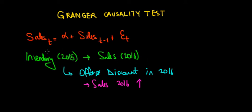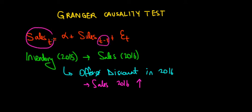The value of inventory in the previous period would be a Granger causal variable for sales. This is an independent variable which is not the lagged value of the dependent variable — it is not the lagged value of sales, but is the lagged value of a different variable altogether, which would be inventory, that affects sales.